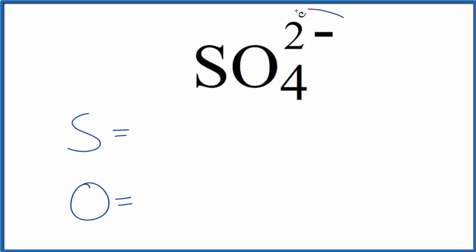For the sulfate ion, we have this 2-. This is the ionic charge. It has two extra electrons. That's what makes it an ion. Since it's negative, we call it an anion. So we have the sulfate anion.